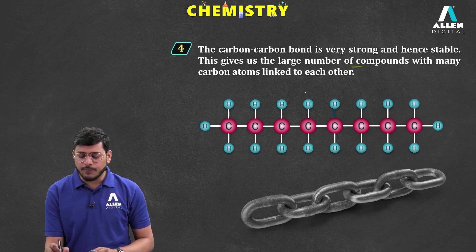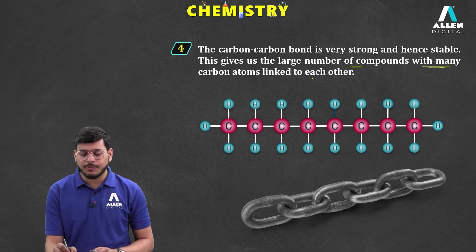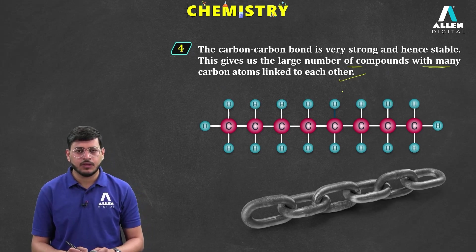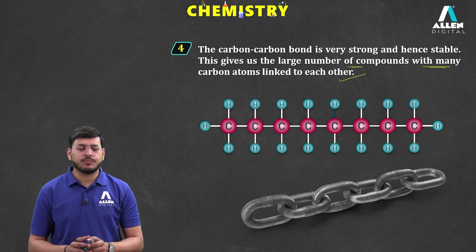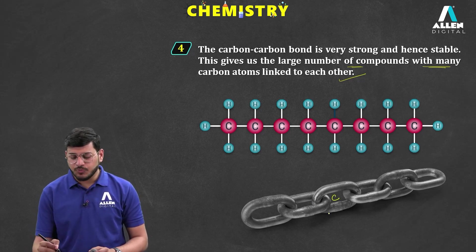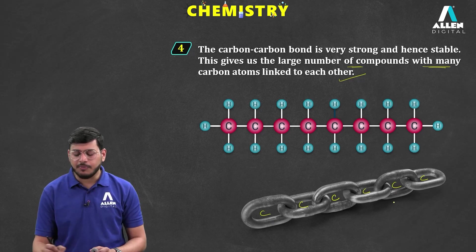The strong carbon-carbon bonds give rise to a large number of compounds with many carbon atoms linked with each other. You can connect carbon to carbon like a chain. Each different chain length gives a different compound — one carbon, two carbon, three carbon — they will not be the same compound; they will all be different.